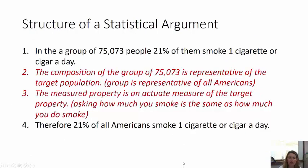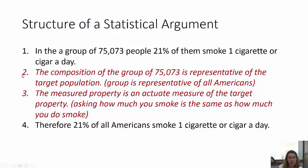Here's the structure of a statistical argument. In a group of 75,000 people, 21% of them smoke one cigarette a day. Oftentimes the conclusion will just skip premises two and three and say: therefore 21% of all Americans smoke one cigarette a day. But in a more detailed account of the survey, they'll fill in the other premises — premise two: the composition of the group is representative of the target population; and three: the measured property is an accurate measure of the target property. They'll try to defend that how they measured how much people smoke actually reflected how much they did smoke.